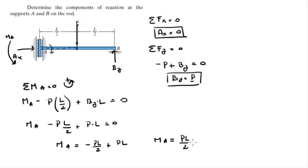And since it's positive, it means it's clockwise, because we assumed originally that clockwise was positive. And that is the reaction moment at A, By is equal to P, and Ax is equal to 0 - final answers.